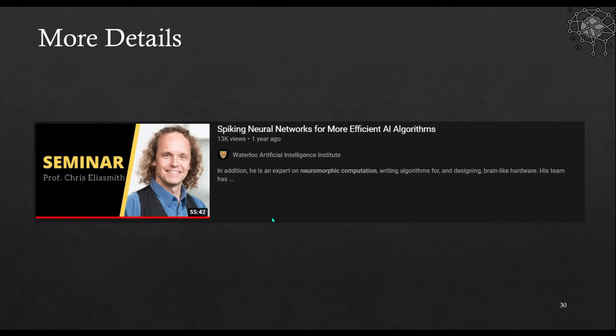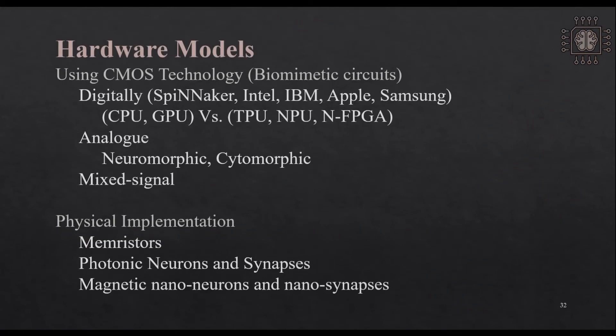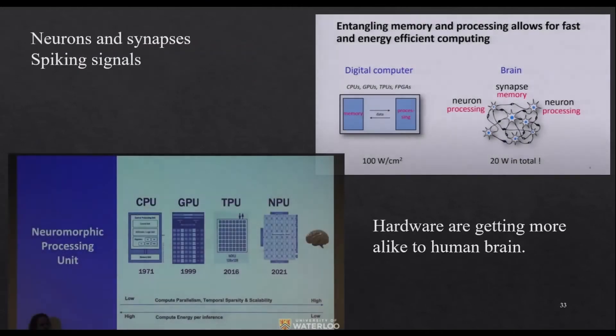Moving on, we have the spiking neural networks, let's see this hardware. Because if you run these spiking neural networks on conventional hardware it's not going to be useful. So for the hardware we have digital, analog mixed signal, and physical. We will look at them one by one.